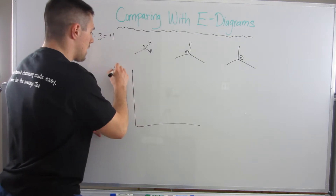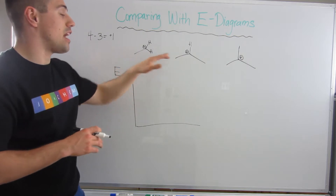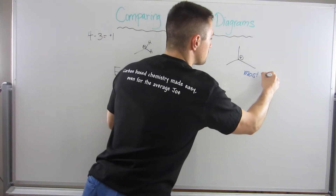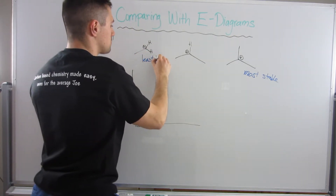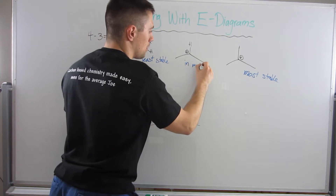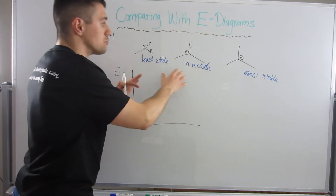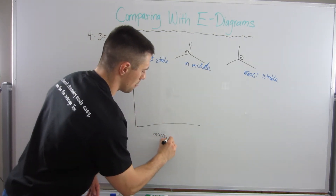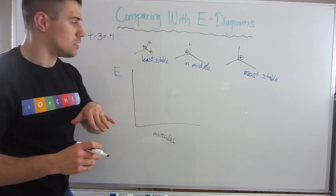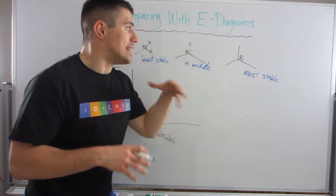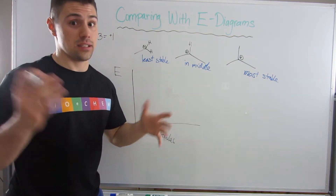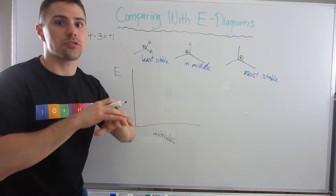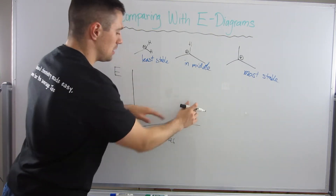I don't have any concrete numbers to associate a certain amount of energy with each of these, but I'll tell you this one is the most stable, this one is the least stable, and this one is in the middle. I want you to show me qualitatively — without any numbers — how to represent this on an energy diagram. Most stable means low energy, because nature likes stability.